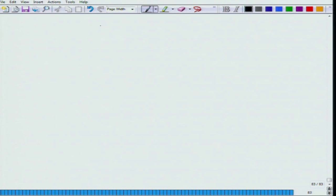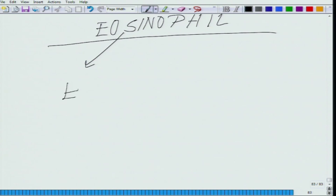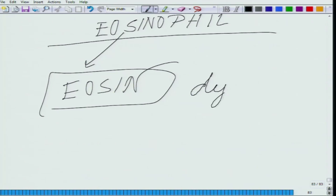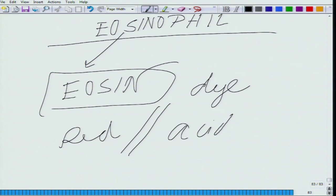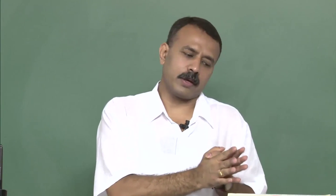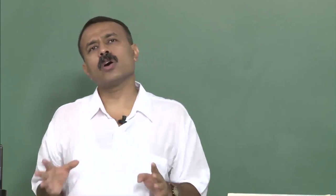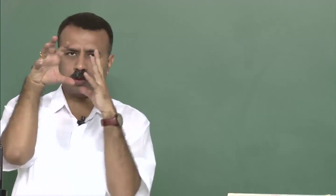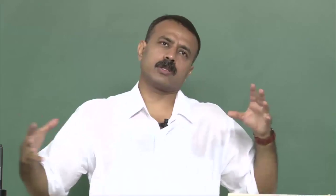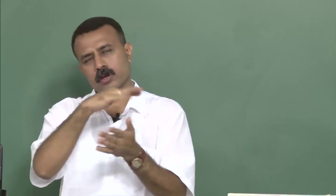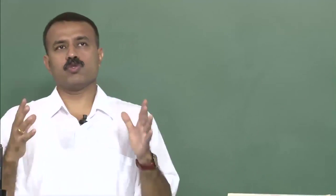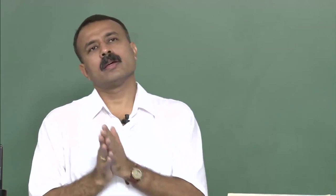Next come eosinophils. Eosinophil got its name because it binds to eosin dye, which is dark red in color and acidic in nature. If you see it under the microscope after staining, eosinophil will look red, because eosin is red and acidic — that is why it is called eosinophil. Just like neutrophils, they also have the tendency to engulf, go to the site of infection or injury, and destroy pathogens or damaged cells by engulfing them inside their body. They are smaller than neutrophils but still significantly large.